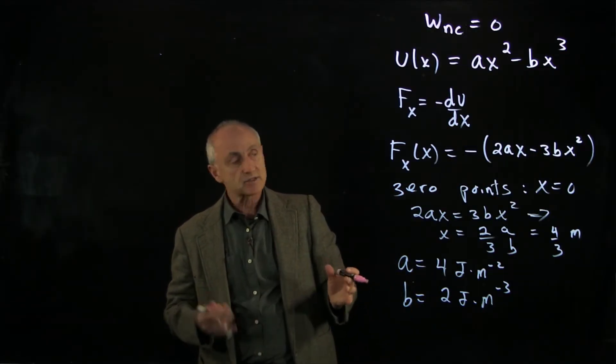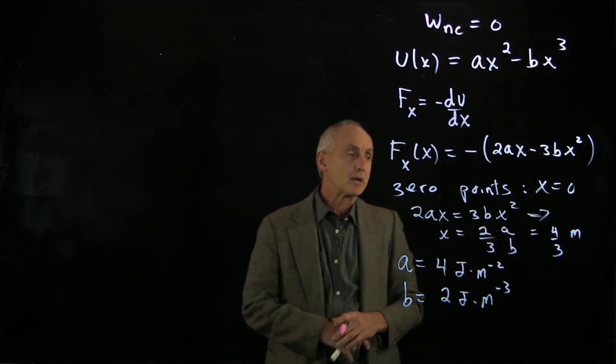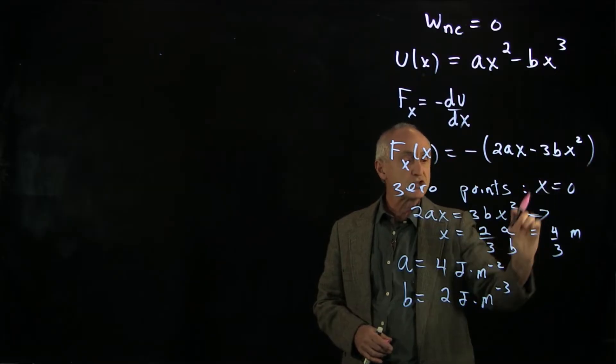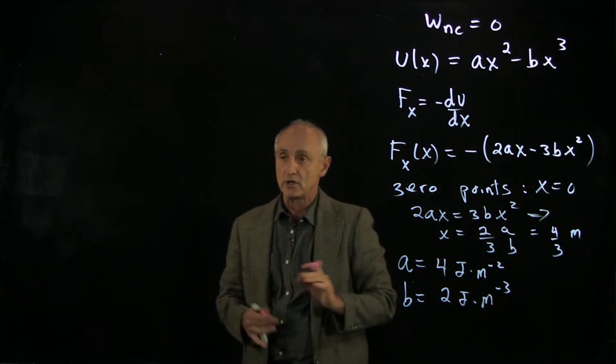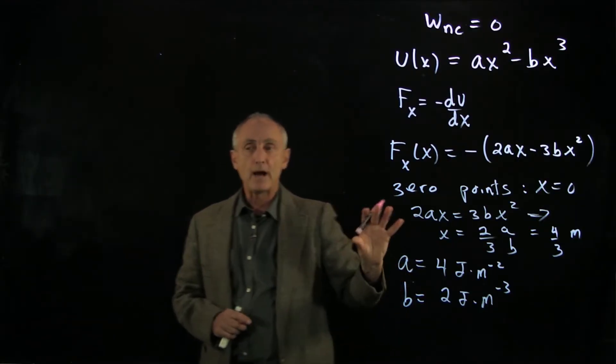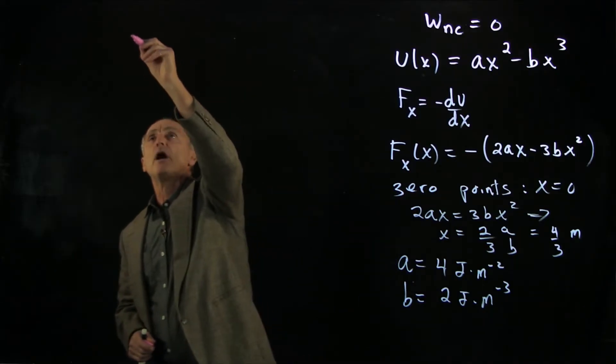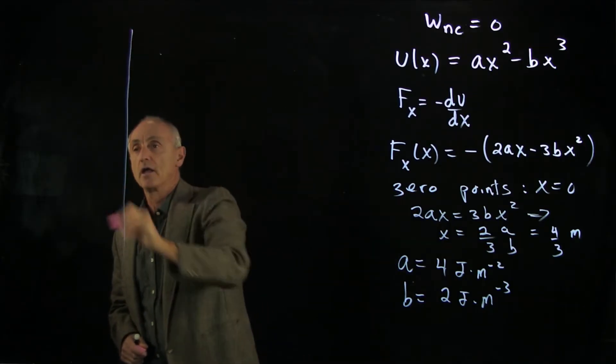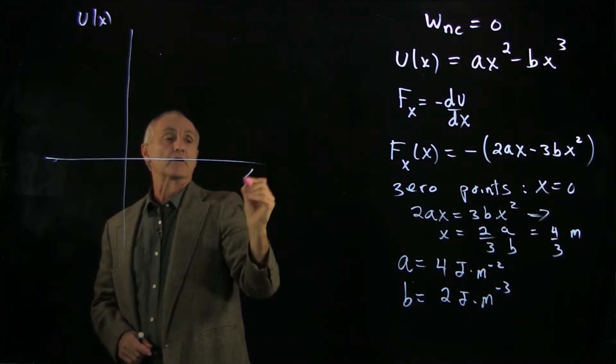That's nice, but we'd like to know some properties of these zero points. If we had a particle that we started with some energy at one zero point, where would it go? What would it do at the other point? In order to understand more detail about these zero points, let's make a plot of our potential energy U(x) versus x.